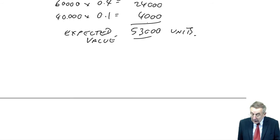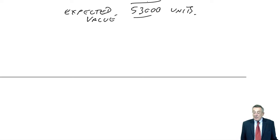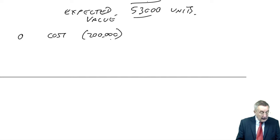And now, we can ignore all those different possibilities. We base our arithmetic, our calculation, as though we were selling 53,000. So it now becomes a normal question. The original cost, time 0, 200,000. The contribution, the contribution each year, well, sorry, the time horizon is four years.